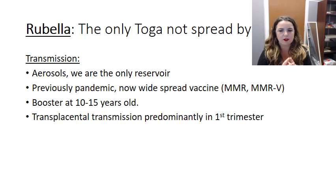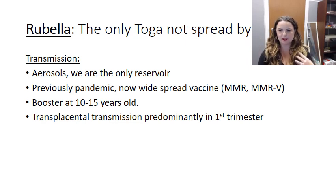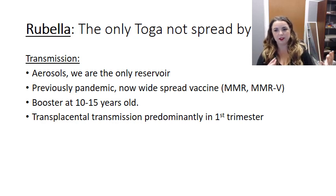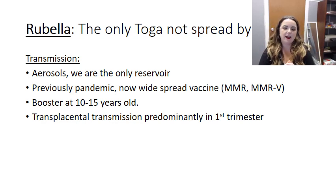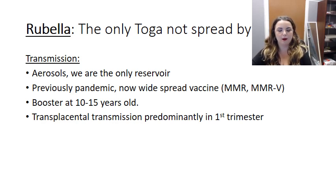Because humans are the only reservoir, the last pandemic was around 1964 and 1965. These days it's very rare — greater than 90% of adults are seropositive. If you're fairly young, that's probably because you were vaccinated; if you were around in 1964 to 65, it's probably because you were exposed. The vaccine is the MMRV or MMR vaccine — this is the R in those vaccines: measles, mumps, rubella. If you're dealing with the V, that's varicella.